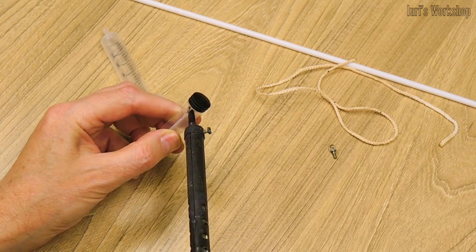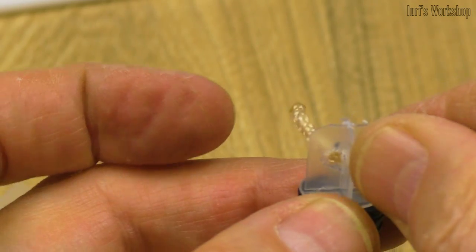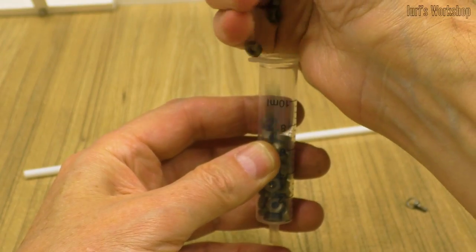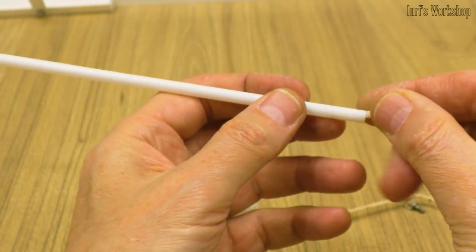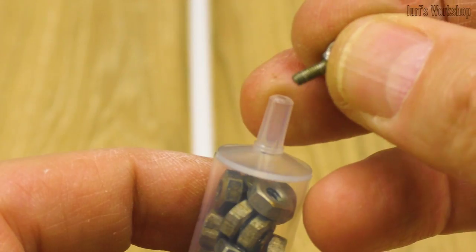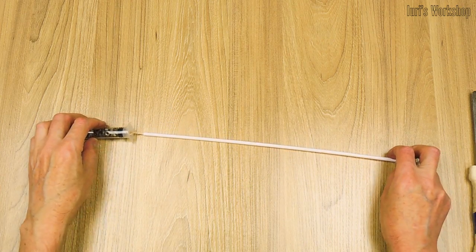A counterweight is required to keep the curtain open. I used a medical syringe for this purpose, which can be filled with sand or scrap metal. The weight of the counterweight is selected experimentally. If the window is too high, then the counterweight will have to be modified so that you can open and close the curtain without standing on the chair.